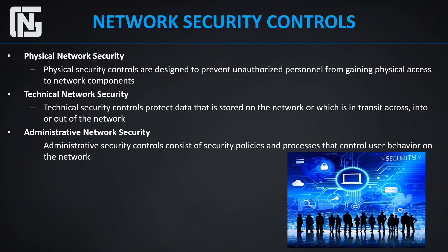There are many layers to consider when addressing network security across an organization, and attacks can happen at any layer in the network security layer model. So it's crucial that the network security architecture be designed to address each and every area. Network security typically consists of three different controls: physical, technical, and administrative.